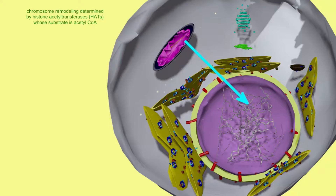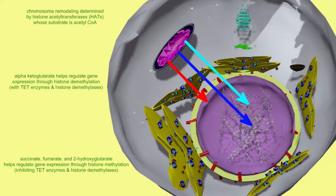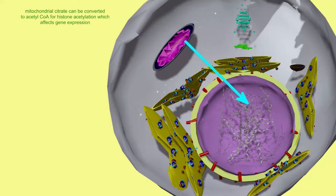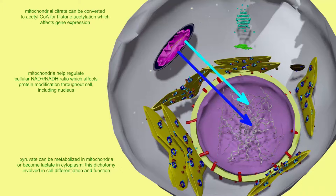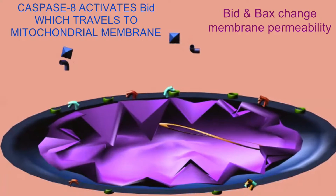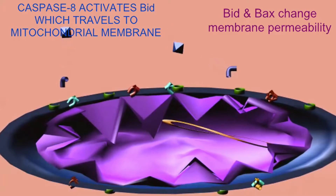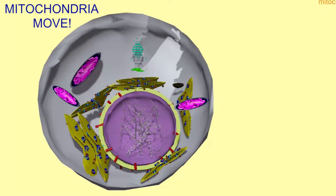Mitochondrial metabolism affects the amount of methyl groups and acetyl groups, which therefore can alter transcription levels. Mitochondria are also important in the roles they play in programmed cell death, which can help prevent cancer and is required for normal development.